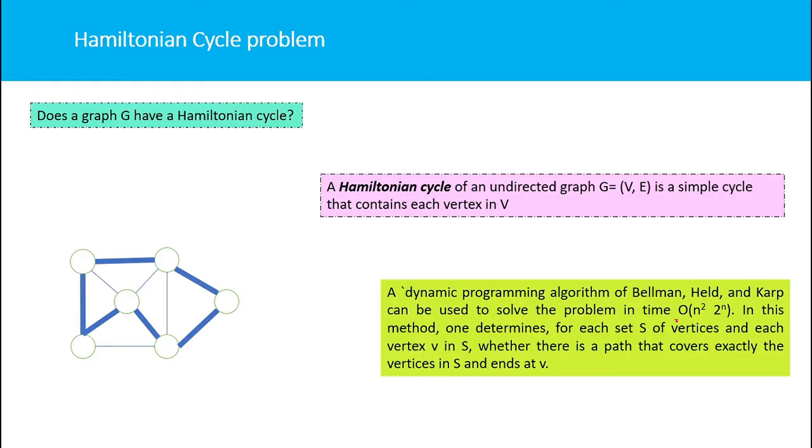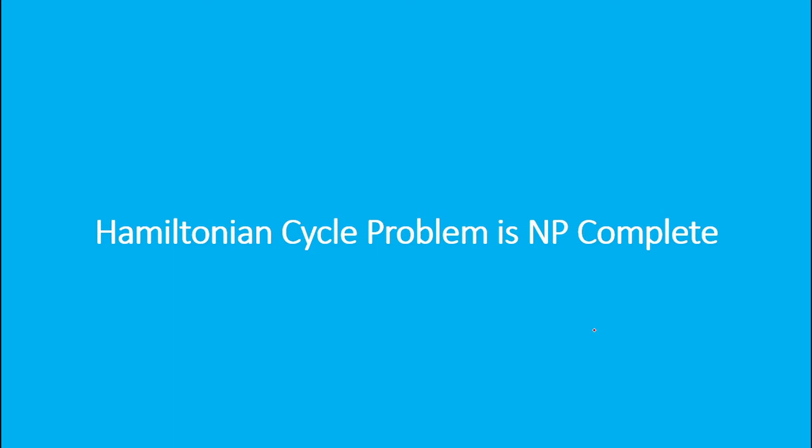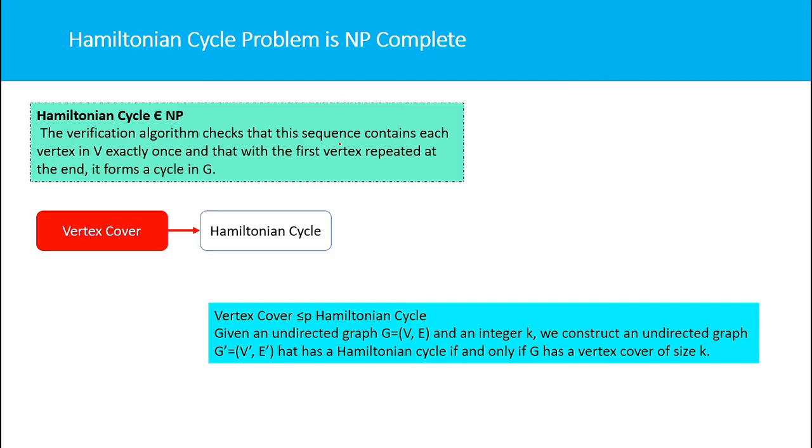If we're given a sequence of vertices, we can verify whether these vertices form a Hamiltonian cycle in polynomial time. The Hamiltonian cycle problem is an NP problem, and we can reduce a known NP-hard problem